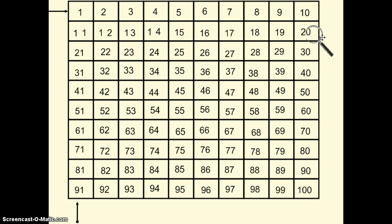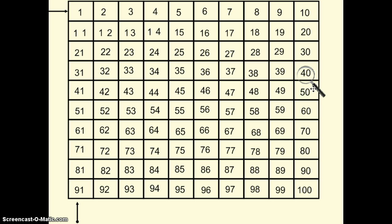Now when we get to the end of our row, we are counting by tens down the last column of our hundreds chart. And that is a pattern that I see here — 10, 20, 30, 40, 50, 60, 70, 80, 90, 100.